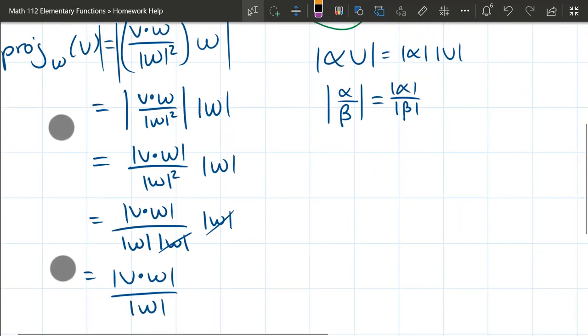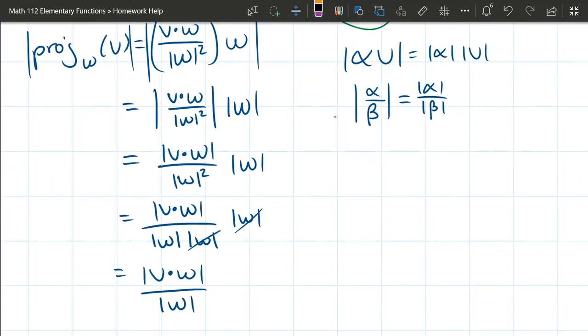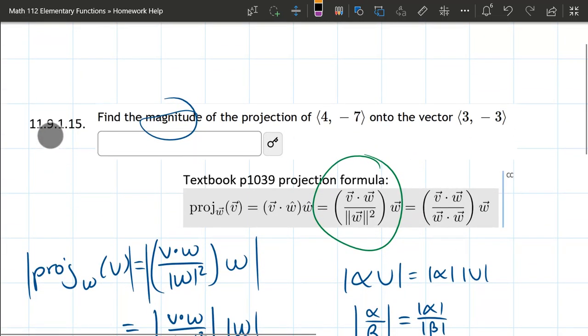And all we need to do is fill in the right. And this is, of course, copying from the top. This is projection of v onto w, and it's the magnitude. Alright, so let's write our vectors down.